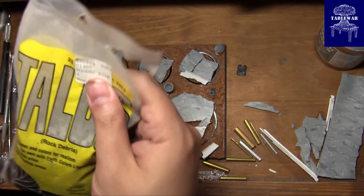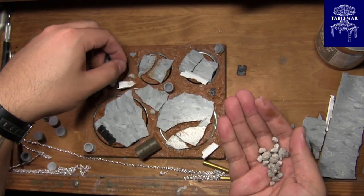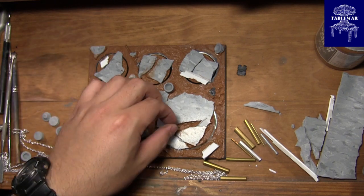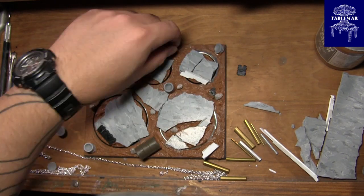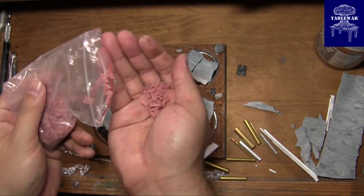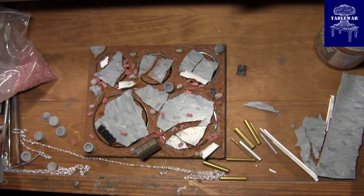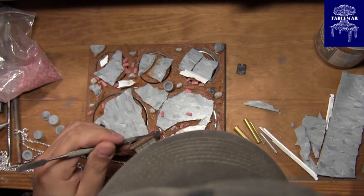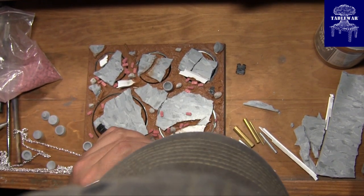While the texture paste is still wet, this is the time to add any details you want like pebbles. I add pebbles, bricks from Pegasus Hobbies, and then I put gravel over the top of it. That was because after I put the texture paste on it looked kind of plain, so I figured we'll throw everything but the kitchen sink at it.